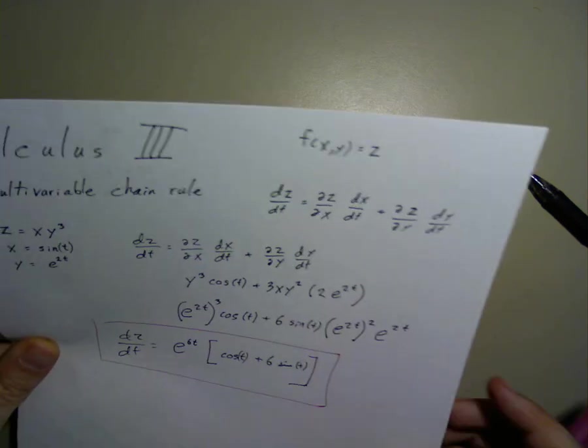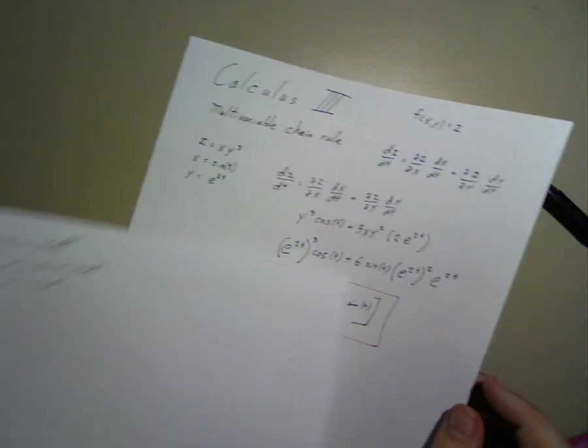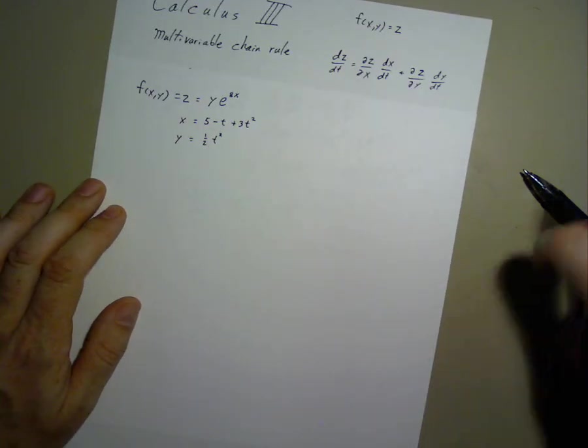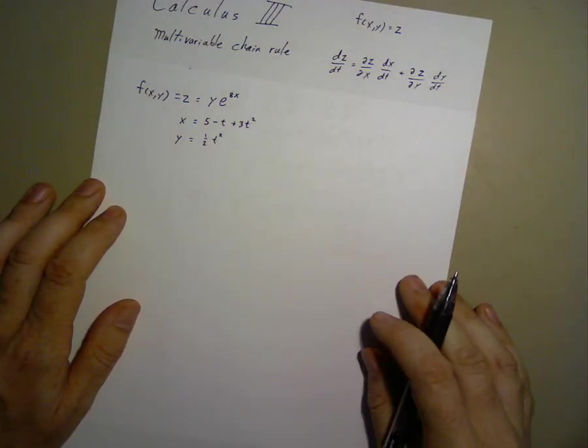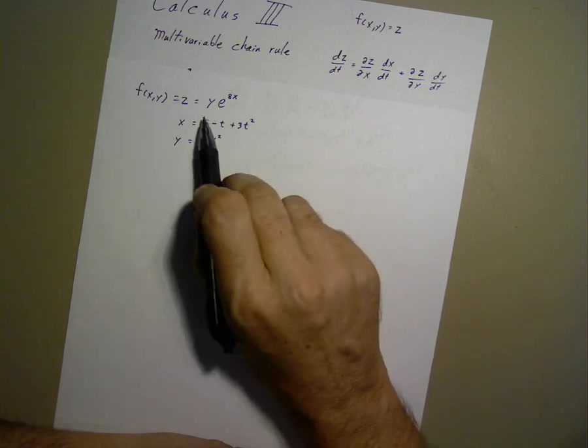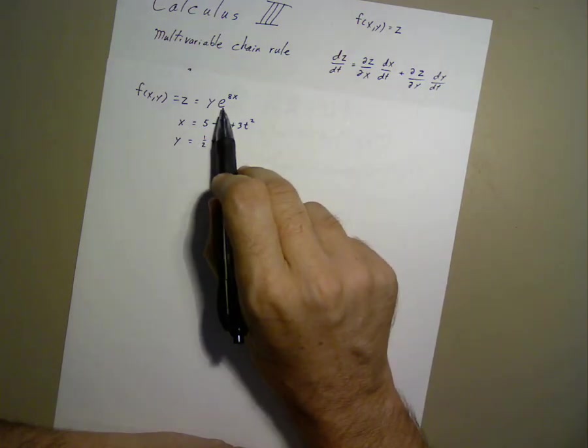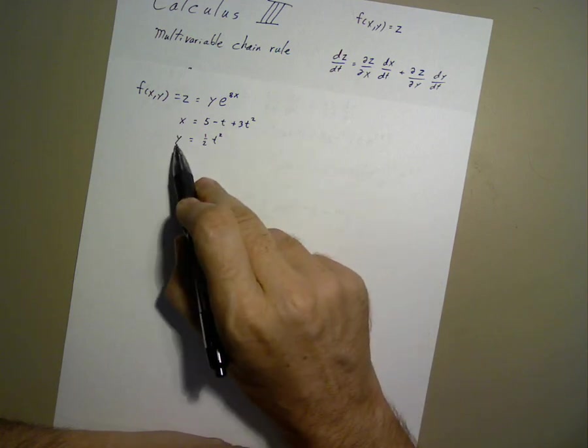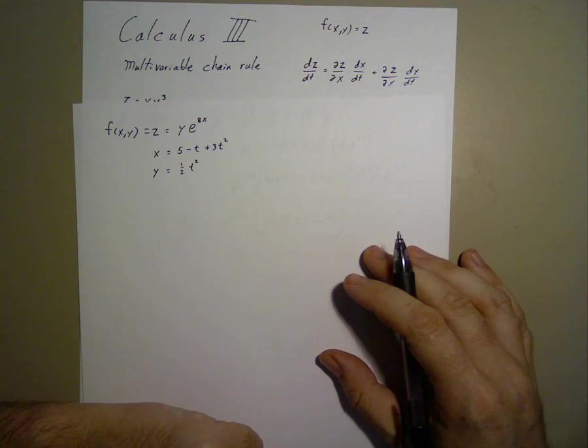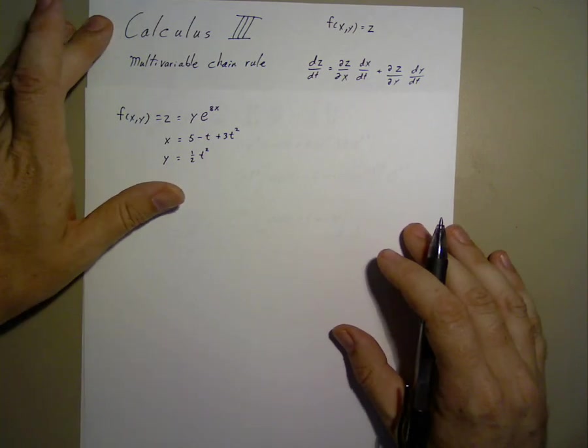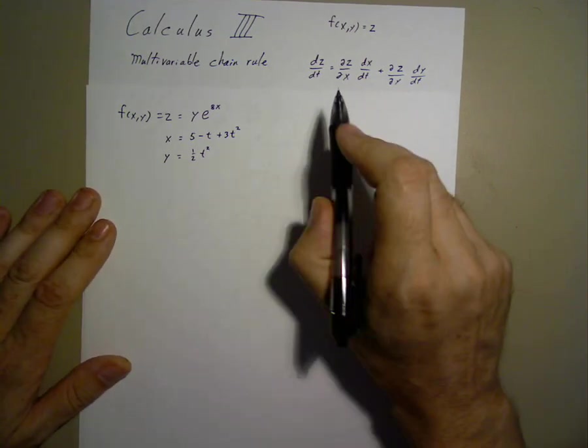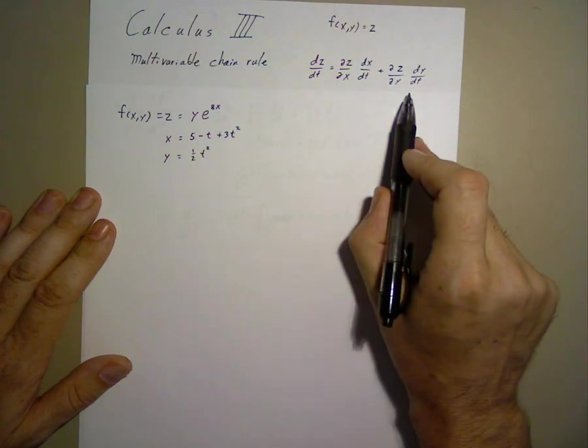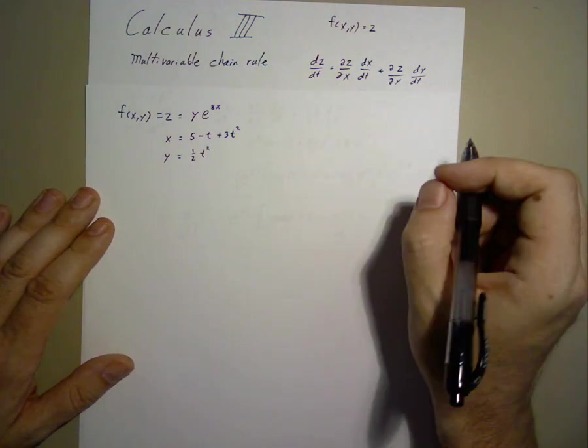If we repeat this for a different function, z equals y to the power of y times e to the power of 8x, with x and y defined as such, then we can use our expansion similarly.